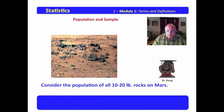This is a population of all 10 to 20 pound rocks found on the planet Mars. How large is this population? This might be a big population. Our population of albino singing pigs was small. A population of 10 to 20 pound rocks on Mars, I suspect, is a very large population.